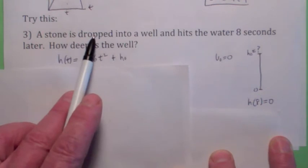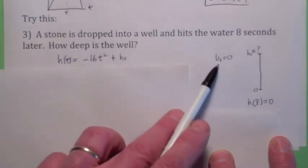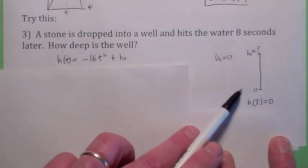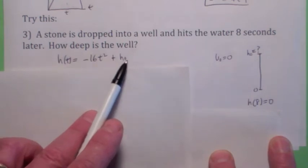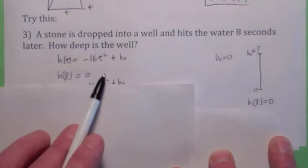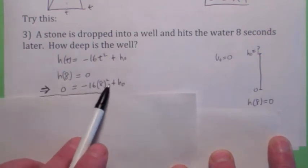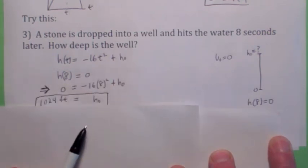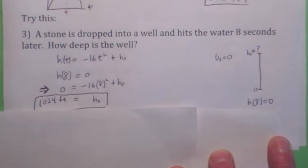But it says dropped. Did you pick up on that? Drop means v₀ is zero. So the question is what is h₀? And we are given the fact that h(8) equals zero. So all you have to do is plug in 8 into this formula and set the whole thing equal to zero so we can solve for h₀. You get 1,024 feet. Nice.